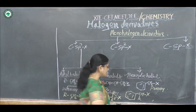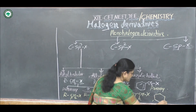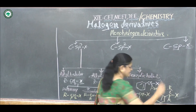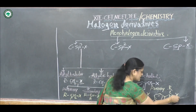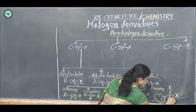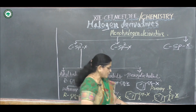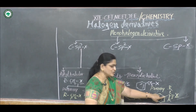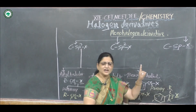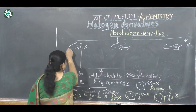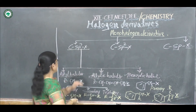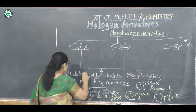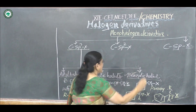For tertiary benzylic halides, the benzene ring is attached to a carbon bearing two alkyl groups R and R, plus the halogen X. This carbon is bonded to three carbon atoms — one from the benzene nucleus and two from alkyl groups — making it a tertiary carbon atom. So sp3-X compounds are classified as alkyl halides, allylic halides, and benzylic halides.